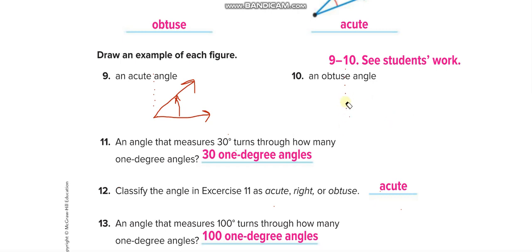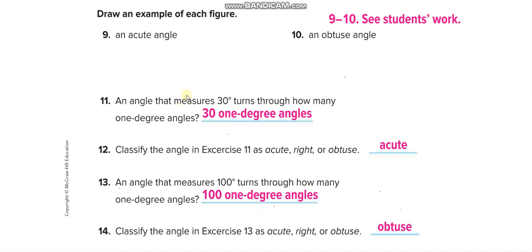Let me clear the screen so you know better about it. An angle that measures 30 degrees turns - of course that is a 31-degree angle. Actually, it is 30 degrees, but the way of saying it is 31-degree angle. Classify the angle in exercise 11. Of course, if it is 30, it means it is less than 90 degrees, so it is an acute angle. An angle that measures 100 turns, so 101-degree angle. Or you can write these both in another way. Let me write it for you here.